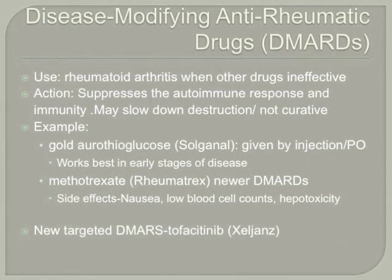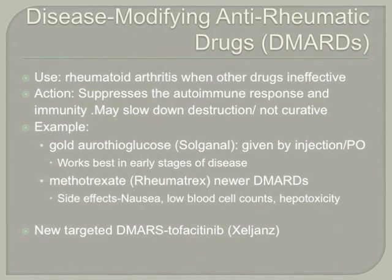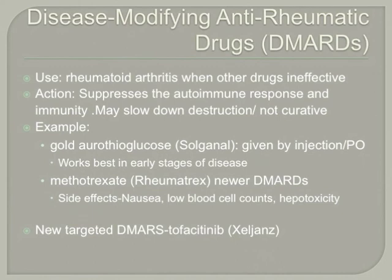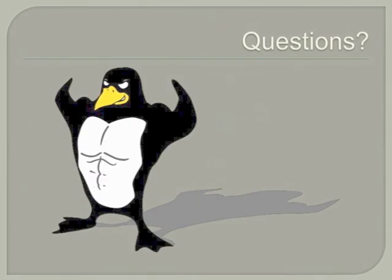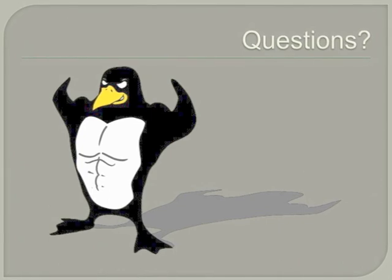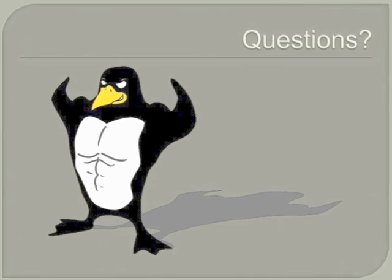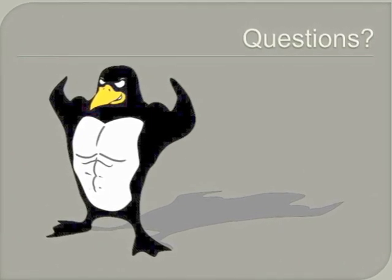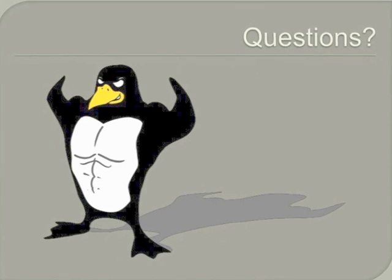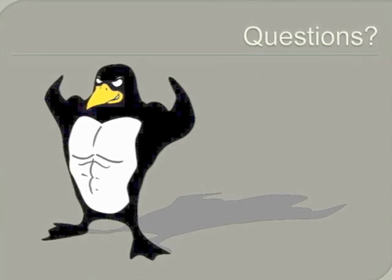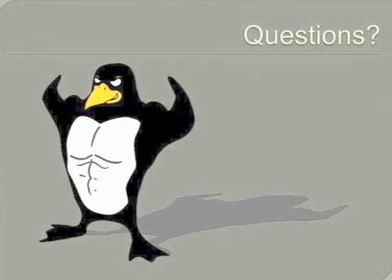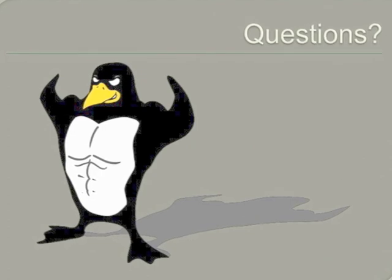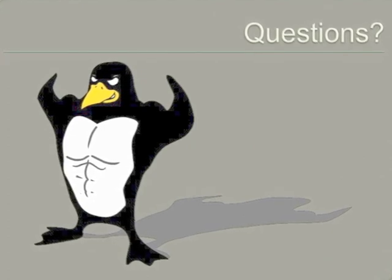There are some new targeted DMARDs on the market, like Xeljanz, and they block precise pathways inside the immune cells. This concludes part one of the musculoskeletal system medications. Make sure you view part two, where we will go over foundational pain medications and anti-inflammatory medications.